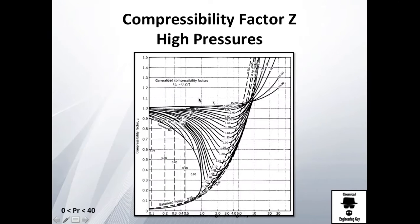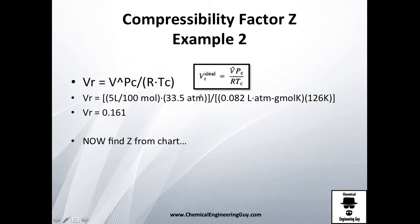Let me calculate this value here. We have the specific volume which is 5 liters in 100 moles, we have critical pressure, we have the R value which I'm going to be using liter atmosphere gram mole Kelvin because I have mole and liter here and atmosphere here. I don't want to change everything, so I think it's better to use this R constant and that temperature 126 Kelvin, and I got 0.161.